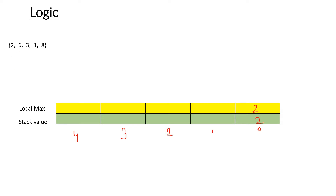Now suppose again if you are going to insert 6 into the stack, it will go and sit at this position. When we are inserting 6 into the stack value, we have to compare this 6 with the local max value. At this point of time the local max value is 2, and comparing 6 with 2, since 6 is greater than 2, we set this local max value also as 6.